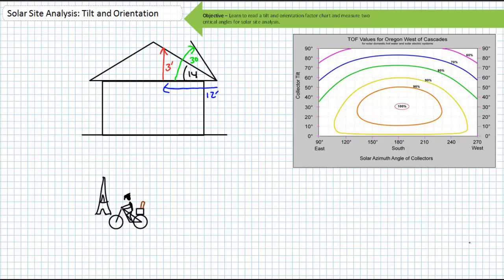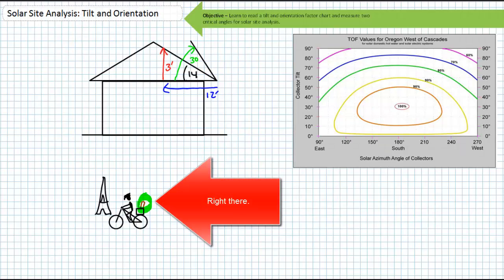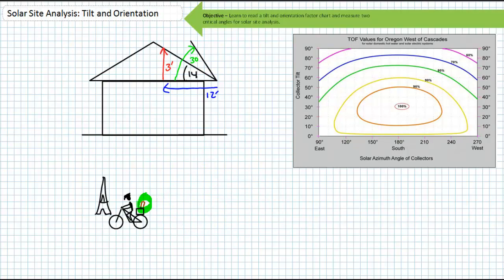Now, measuring tilt is only half the battle. And in comparison to measuring orientation, it's as easy as finding a baguette in a French person's bike basket. Orientation is the other angle we need to measure before we can use the TOF chart. This is a little tricky because the angle referenced on the TOF chart is with respect to true north and not magnetic north.